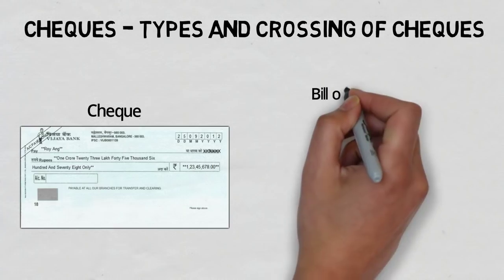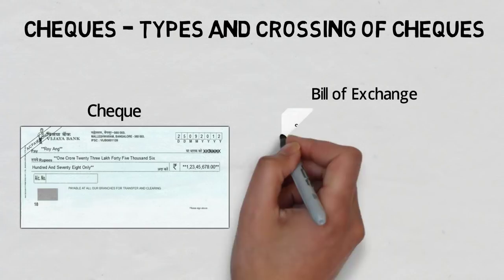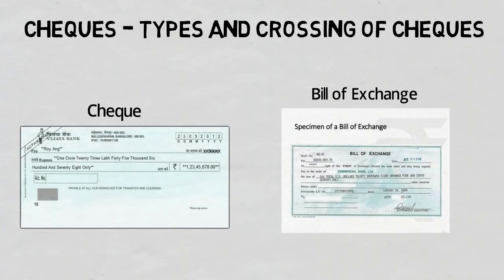A bill of exchange is a written and signed order directing the person named in it to pay a certain amount of money only to, or to the order of, a certain person, or to the bearer.